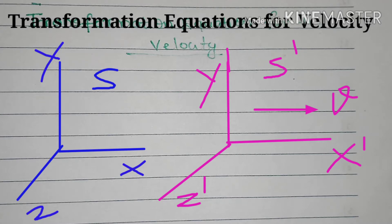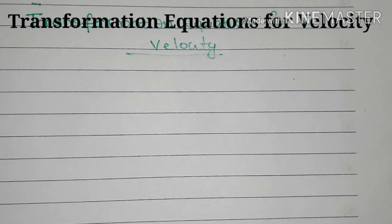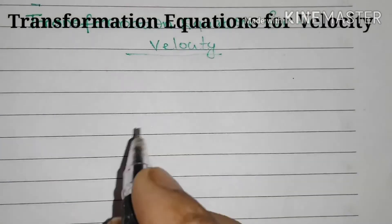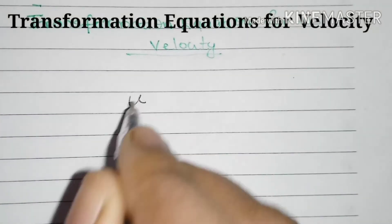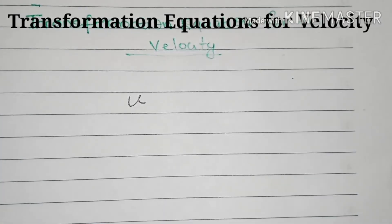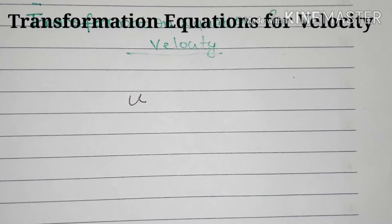Let a particle have a velocity U in the frame S, and let U dash be the velocity of that particle relative to S dash.